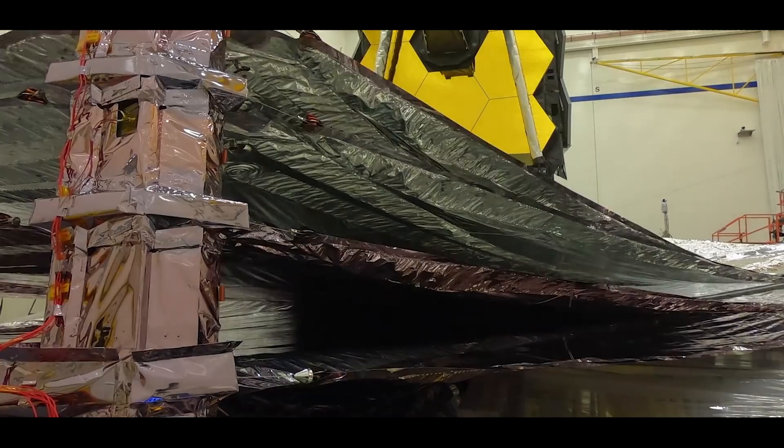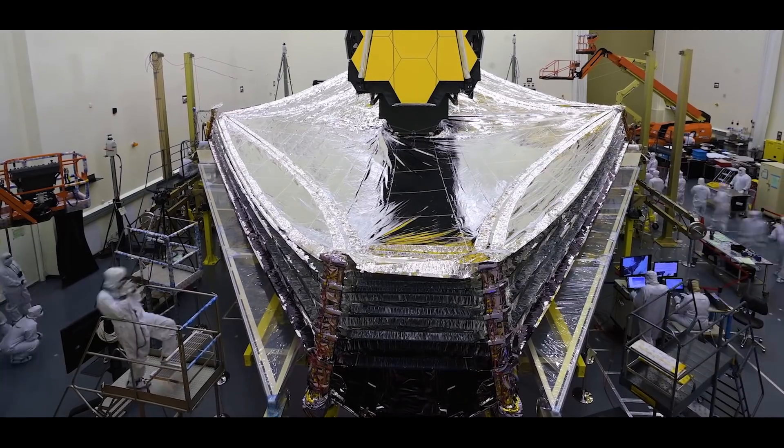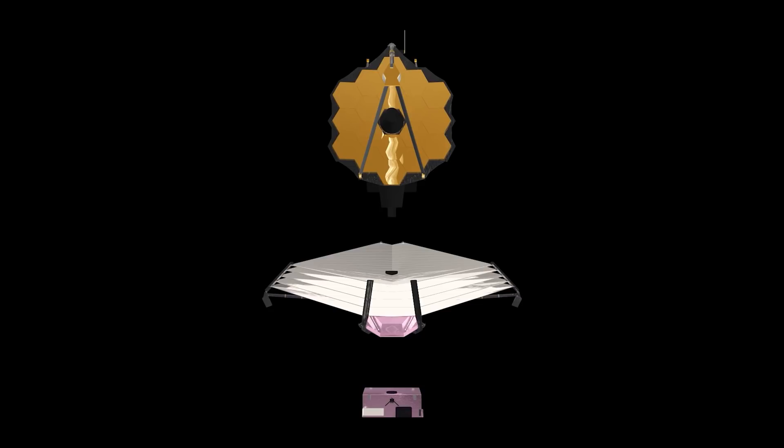Once the observatory is operational in space, the light from distant stars and galaxies are the first to hit the primary mirror, which then reflects them in a focused beam to the secondary mirror with a diameter of 0.74 meters.